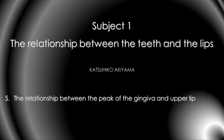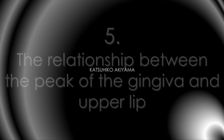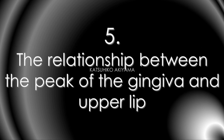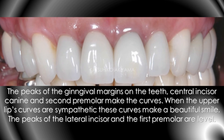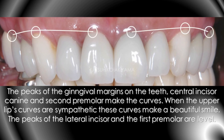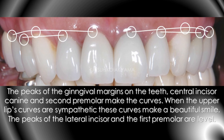Number 5: the relationship between the peak of the gingiva and the upper lip. The peaks of the gingiva margins on the teeth — central incisor, canine, and second premolar — make curves. When the upper lip's curves are sympathetic, these curves make a beautiful smile. The peaks of the lateral incisor and the first premolar are level. This is very important.